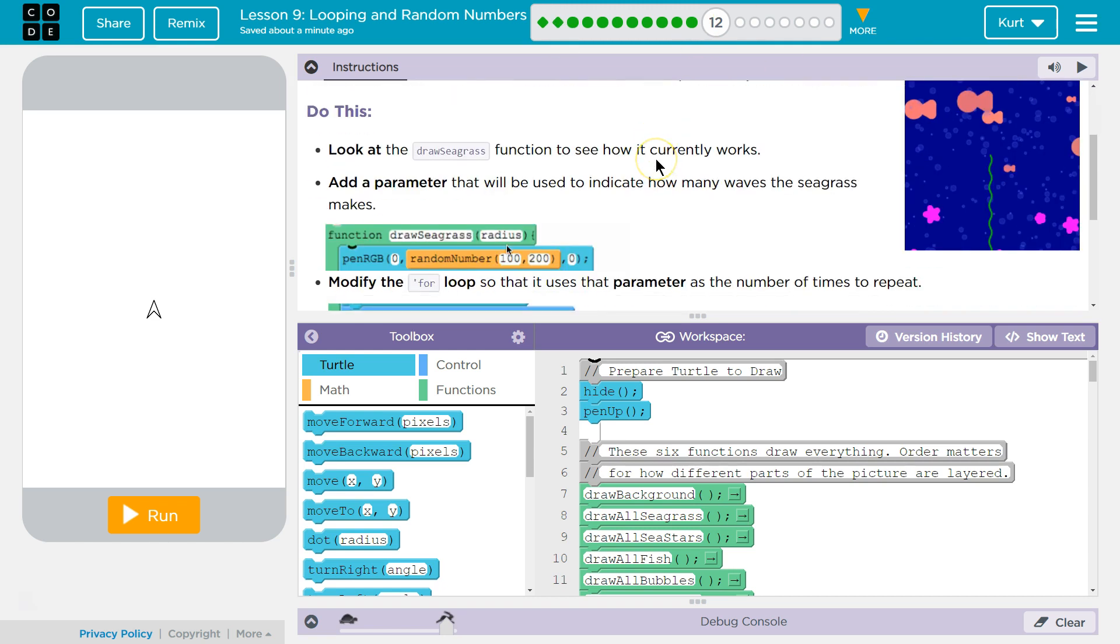Do this: Look at the Draw Seagrass function to see how it currently works. Add a parameter that will be used to indicate how many waves the seagrass makes. And they give us an example of that. Comma. Make sure to add the comma. And then I'm going to use their name for the parameter numwaves.